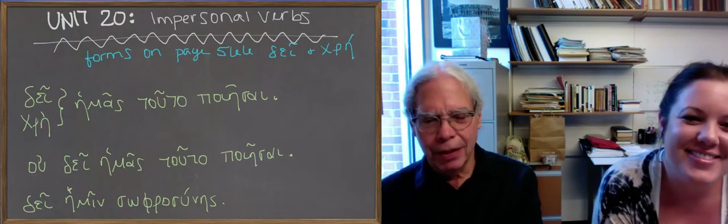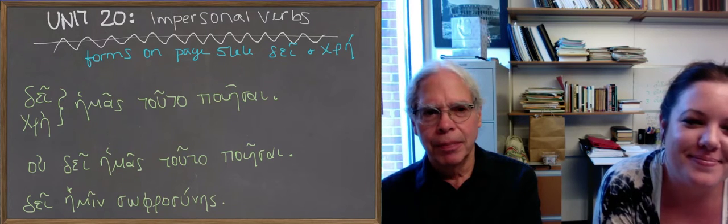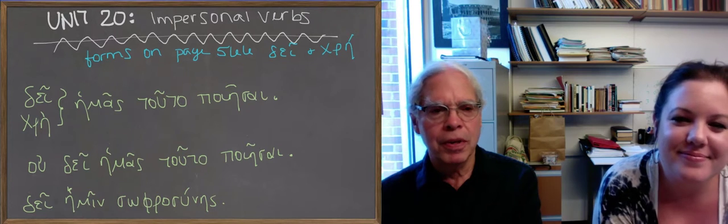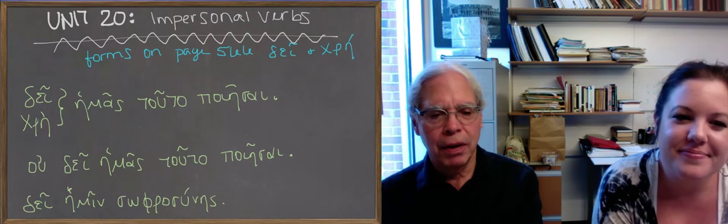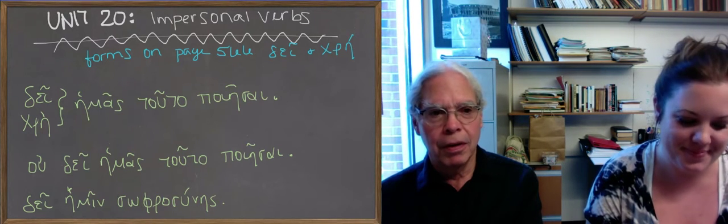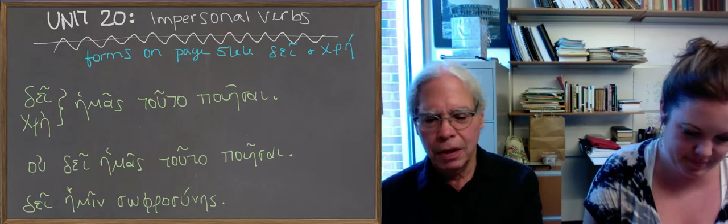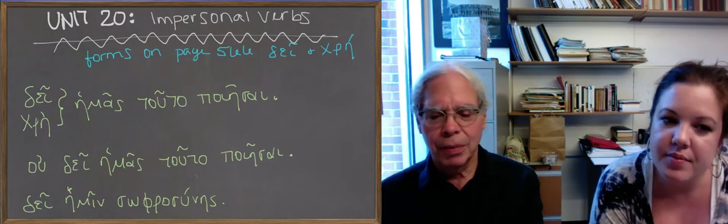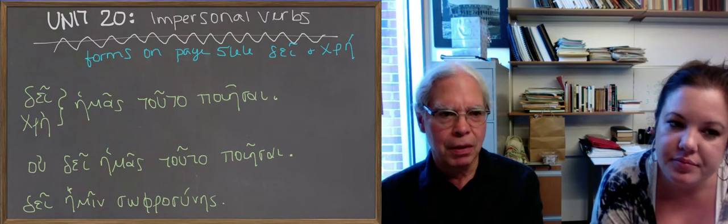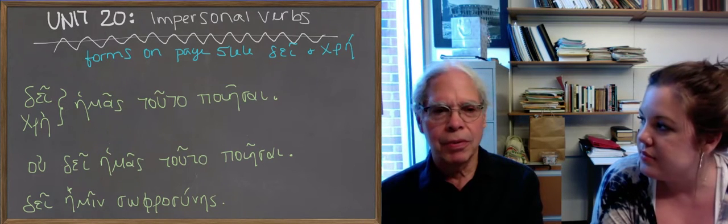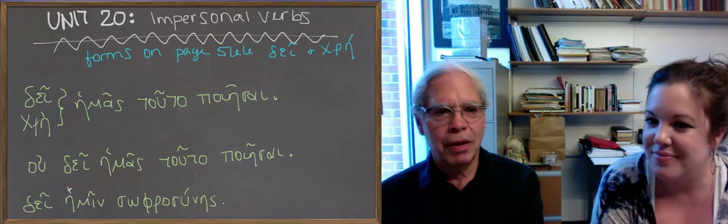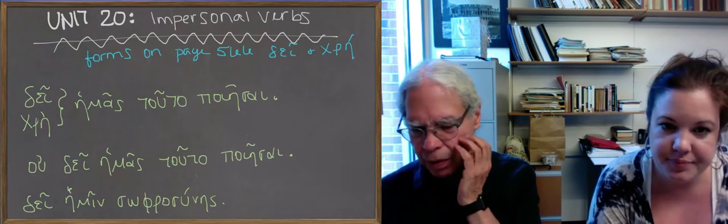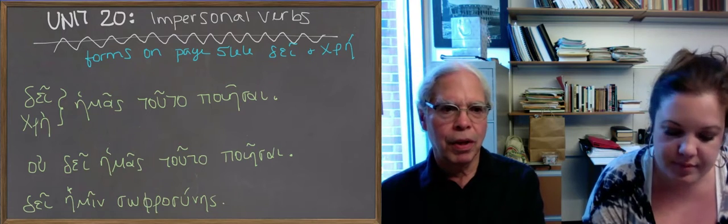Okay, impersonal verbs. It's a weird concept. It's verbs which are stuck in the third person singular and which don't have a person, a she, a he, a you, or an I as a subject. The subject in such verbs is it, which is not a person by definition and it's a kind of filler word. But we have these in English and we do something very similar to what Greek does with them.